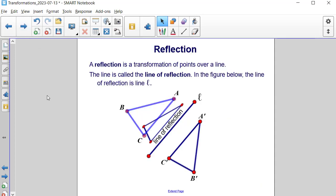Reflections. A reflection is a transformation of points over a line. The line that we're transforming over is called the line of reflection.